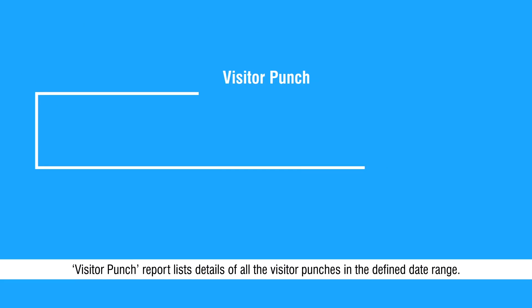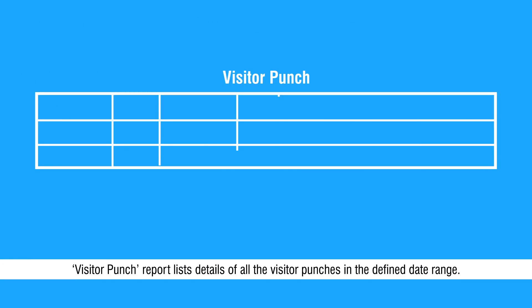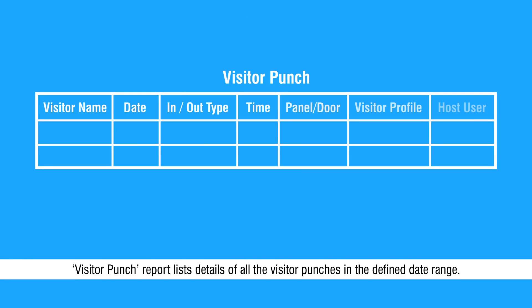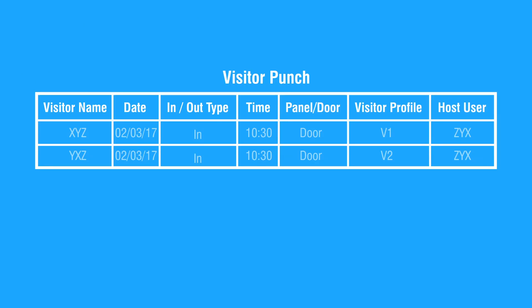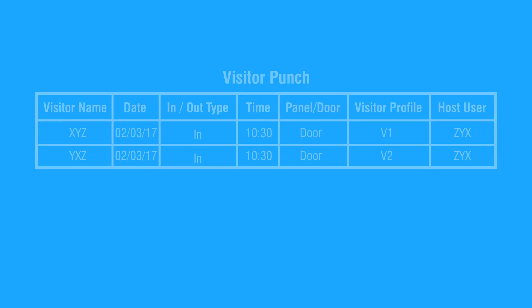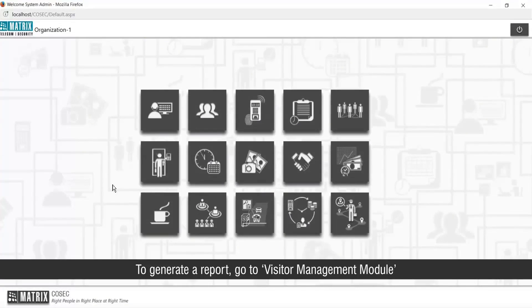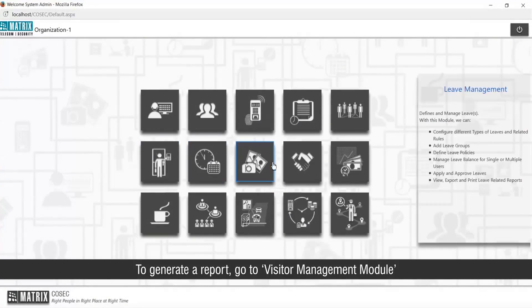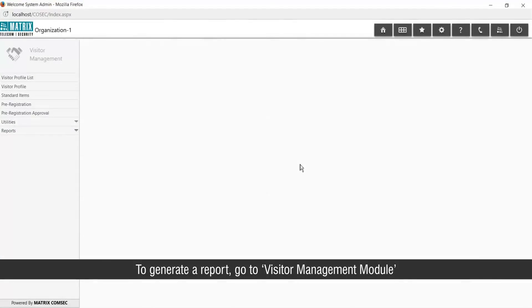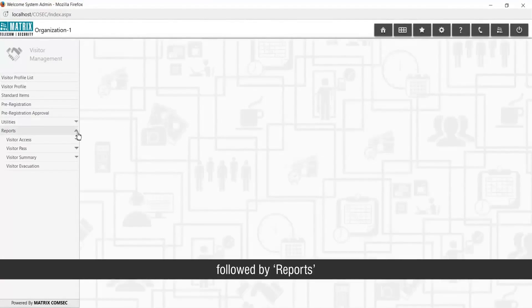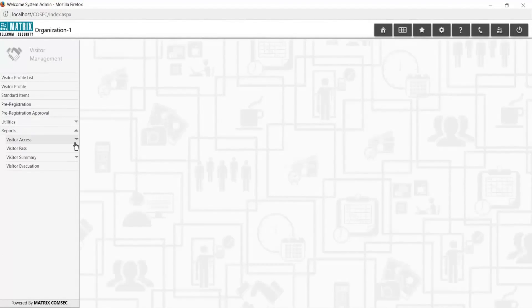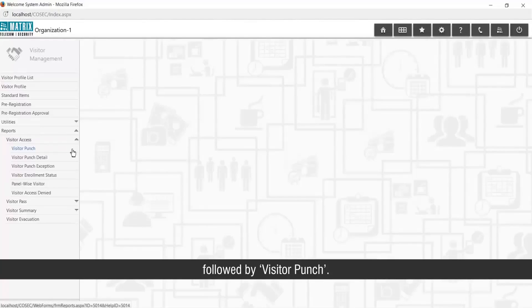Visitor Punch Report lists details of all visitor punches in the defined date range. To generate a report, go to the Visitor Management Module, followed by Reports, followed by Visitor Punch.